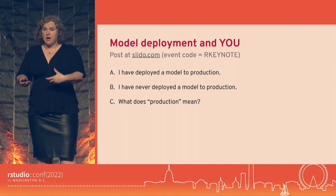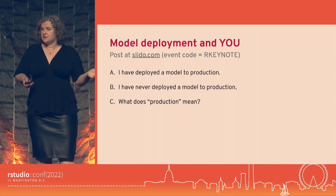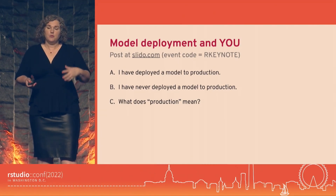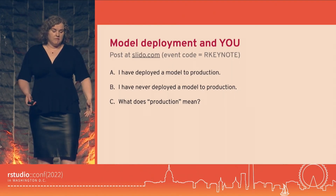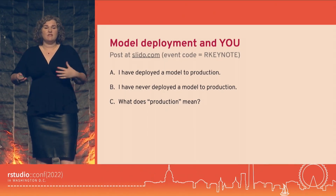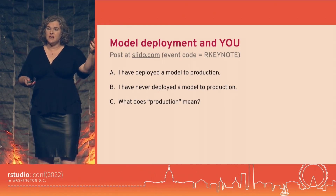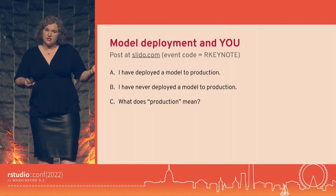By that definition, taking a model and putting it in a Shiny app and letting people interact to get predictions — we can say that's production. The industry standard these days for model deployment is to create RESTful APIs, so you can scale your API, have it as a microservice, and take a model you've trained and put it in a computational environment accessible to anyone in your organization who needs it.